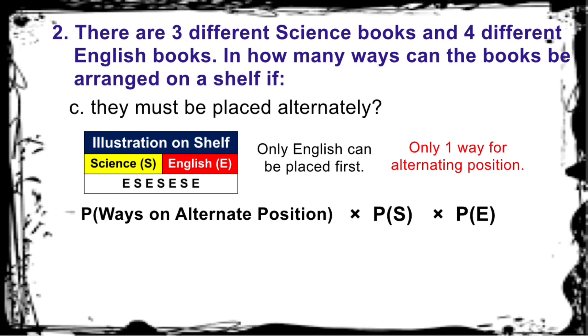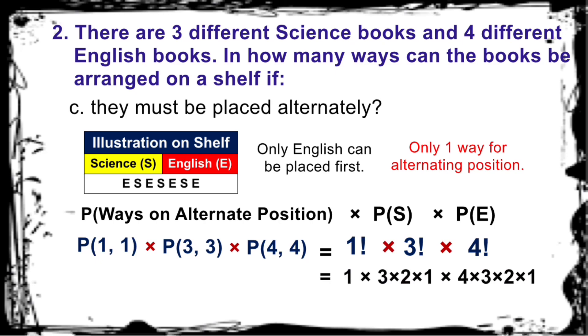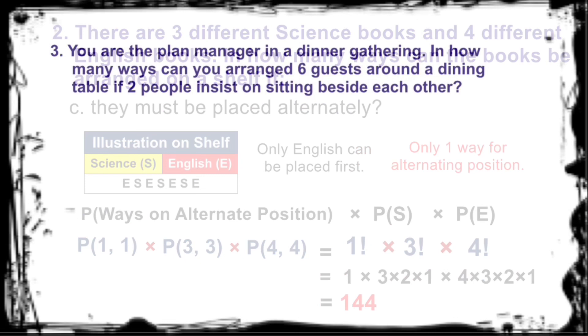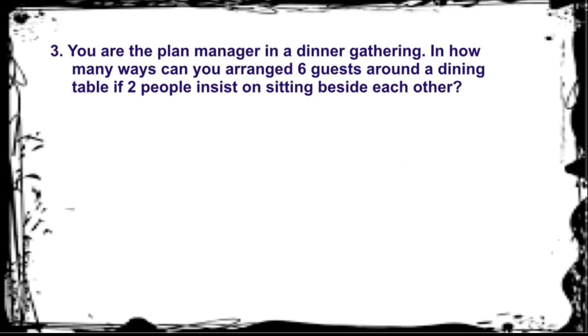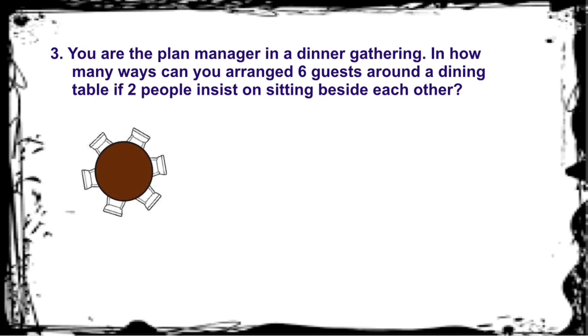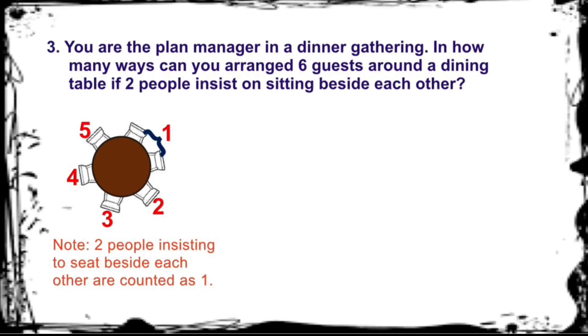Let's illustrate. Two people insisting to sit beside each other are counted as one. You count their seats. Start. Did you count it right? You count five seats, right? Nice.